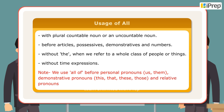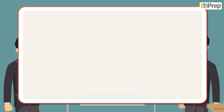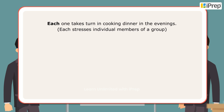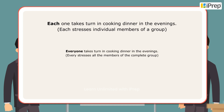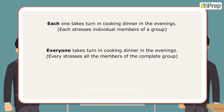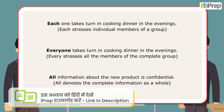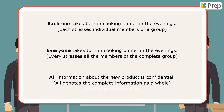We also use 'all of' before relative pronouns whom and which. Example sentences: 'Each one takes a turn in cooking dinner in the evenings' — each stresses individual members of a group. 'Everyone takes a turn in cooking dinner in the evenings' — every stresses all members of the complete group. 'All information about the new product is confidential' — all denotes the complete information.